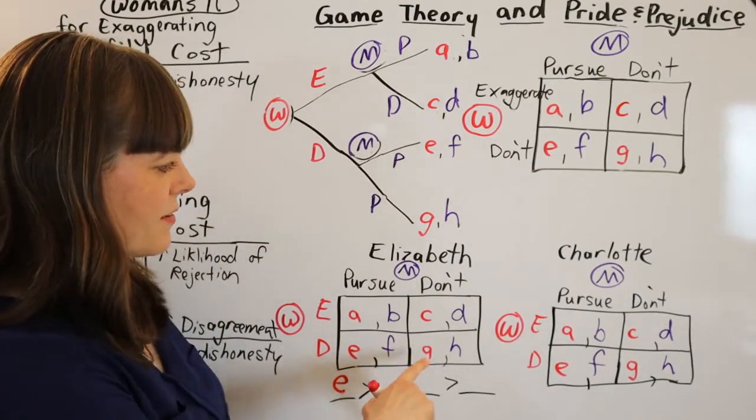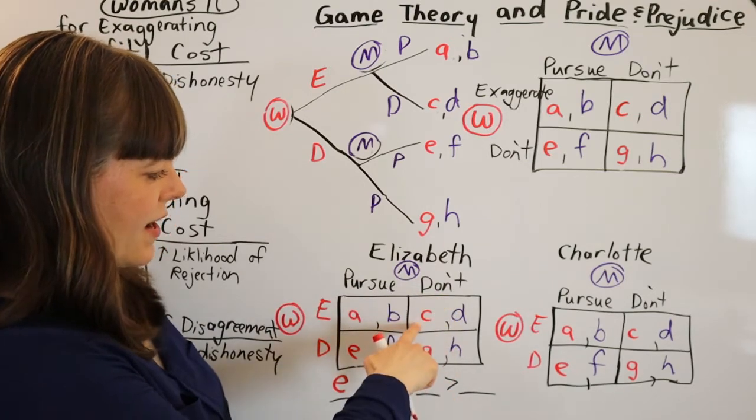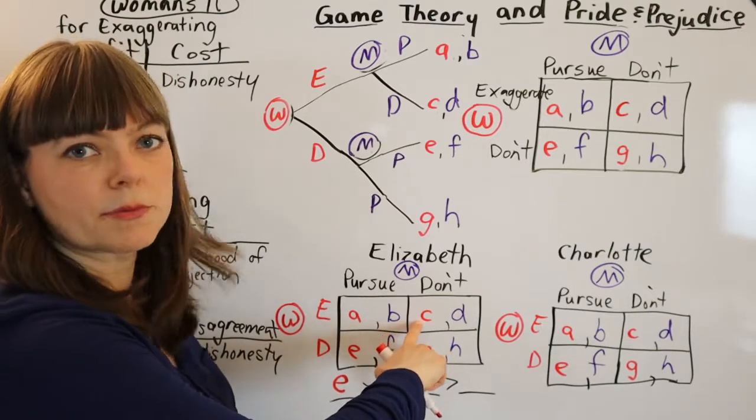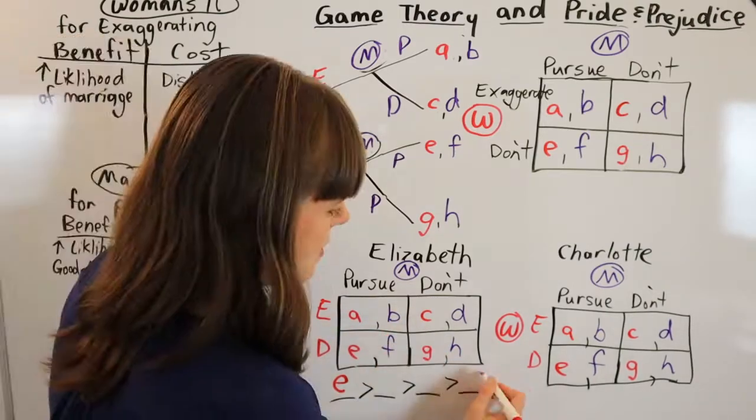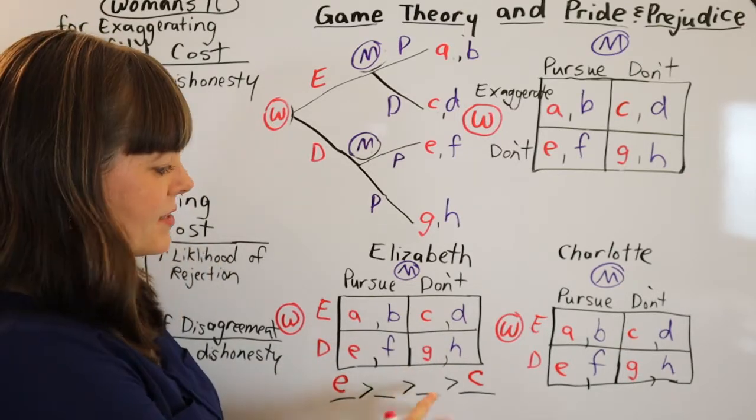Now her least favorite box, of course, is going to involve not being pursued. And of course, Elizabeth really doesn't like exaggerating. So C is probably her least favorite payoff. And then you just have to decide which of the middle two payoffs is better than the other.